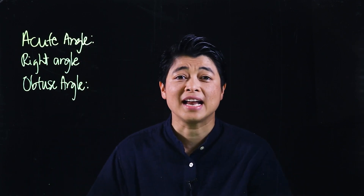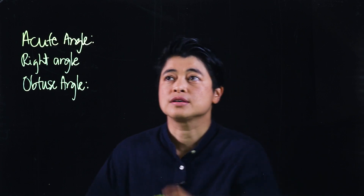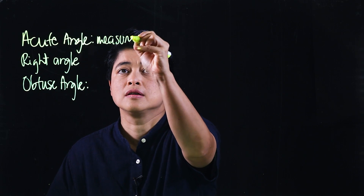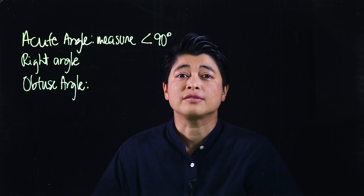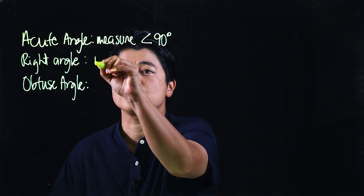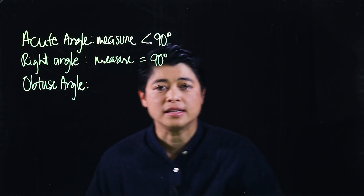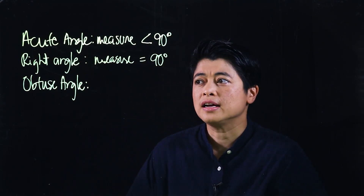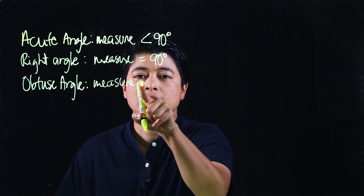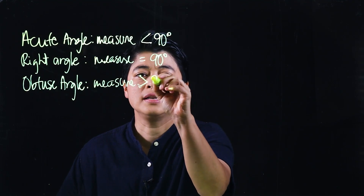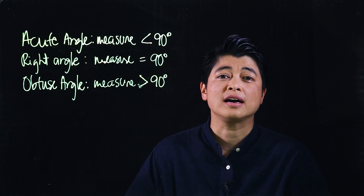An acute angle is an angle whose measurement is less than 90 degrees. A right angle is an angle whose measure equals 90 degrees. And an obtuse angle measures more than 90 degrees.